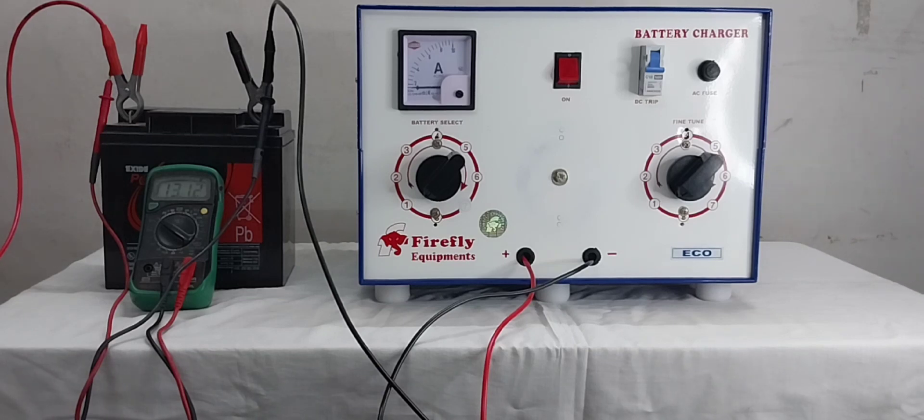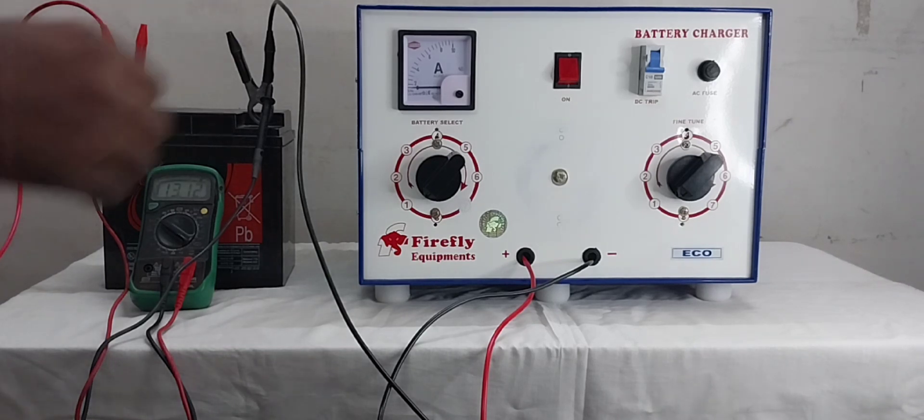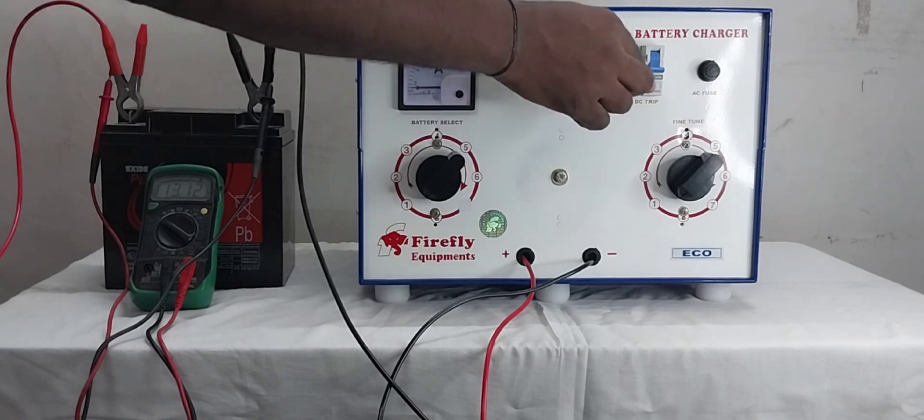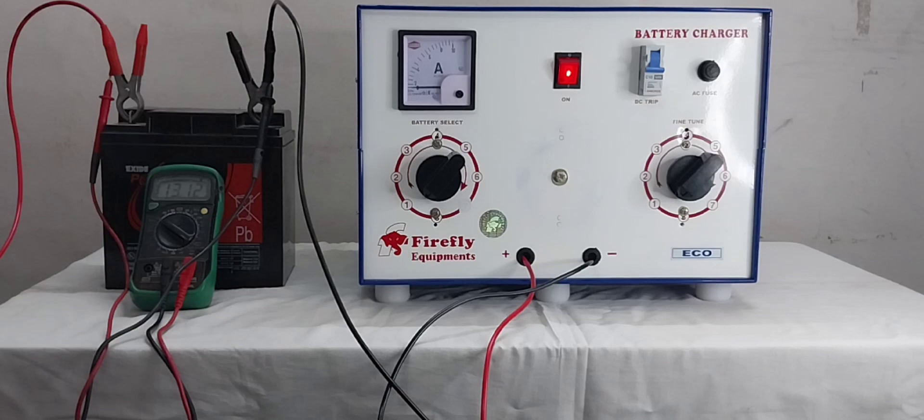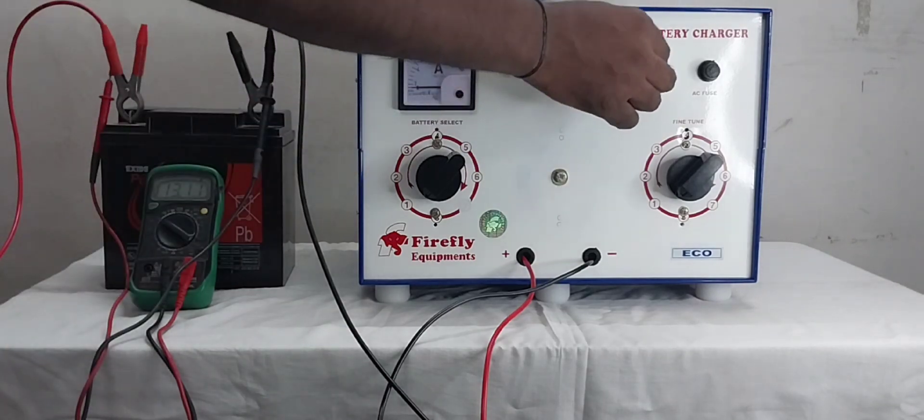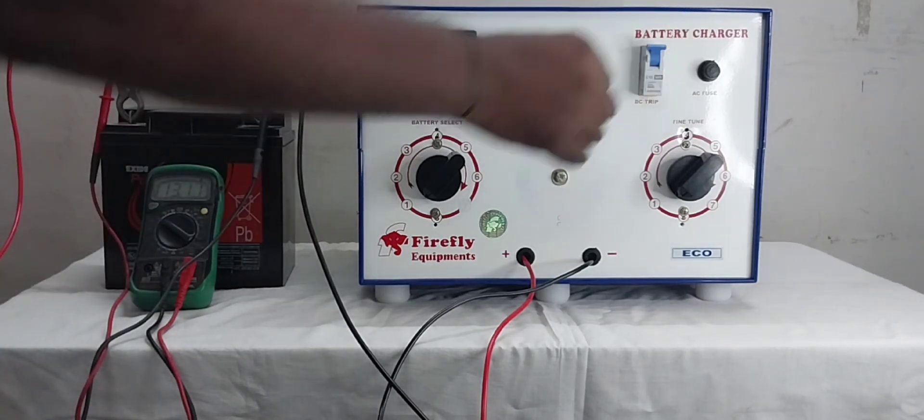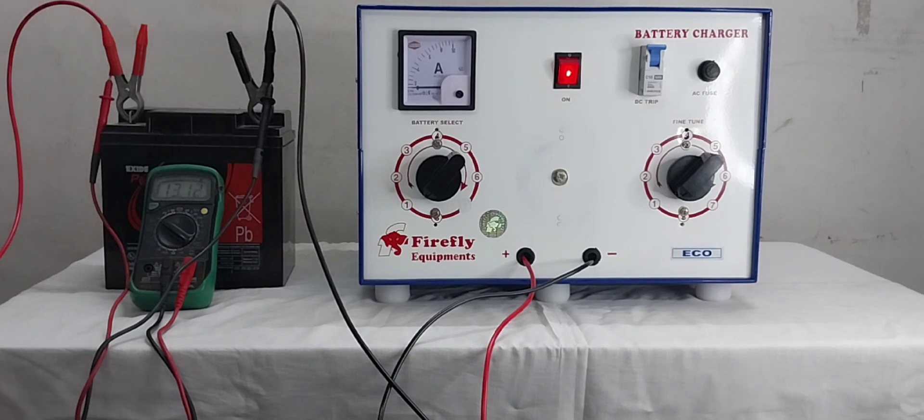Now we are switching on charger. First AC power on red switch, then MCB. We have to lift the breaker upside so that is on.